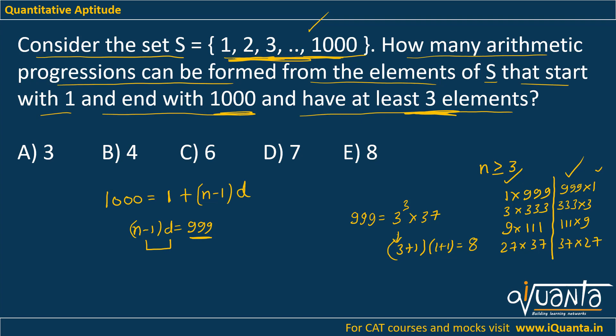Now let us try to remove some factor pairs that are not satisfying the conditions. For example, this first one, 1 times 999, means (N minus 1) should be equal to 1 and D should be equal to 999. So if (N minus 1) equals 1, that means N should be equal to 2, but we have to take N greater than or equal to 3. So that means this factor pair will be removed.